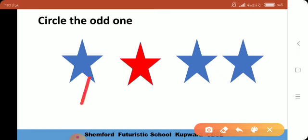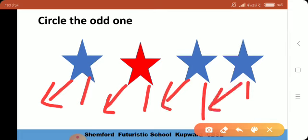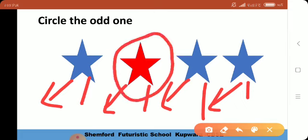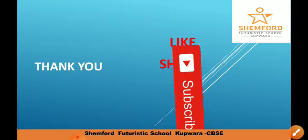We are having four stars — one, two, three, four۔ آپ بولوگے which one is odd؟ This is a blue star، this is a red star، this is a blue star، this is a blue star۔ Which one is odd? Red is odd — کیونکہ ان تینوں کا color same ہے، blue ہے، اور اس کا color different ہے، red ہے، so یہ odd ہے۔ Thank you so much!